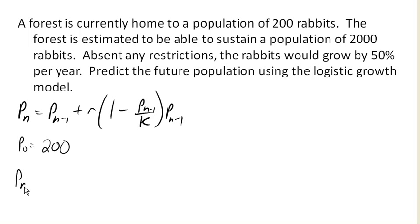In general, what's our value for r? Our natural growth rate is 50%, so that'd be 0.5. Then we have 1 minus p_{n-1} over our carrying capacity. Our carrying capacity in this case is 2,000, the maximum sustainable population, times p_{n-1}.